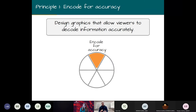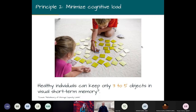Principle one: encode for accuracy. Design graphics that allow viewers to decode information accurately. Principle two: minimize cognitive load. Healthy individuals can only hold three to five objects in visual short-term memory.